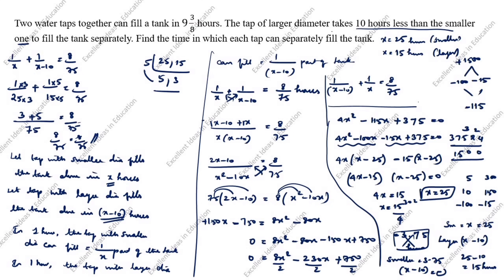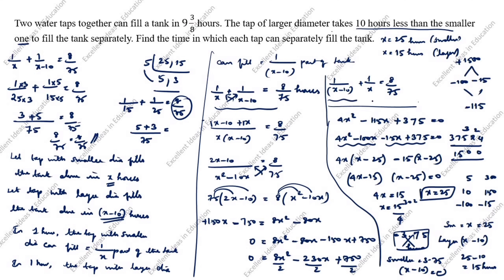You can also verify using the other form: 1/(x minus 10) + 1/x = 1/15 + 1/25. Taking common denominator 75: 5/75 + 3/75 = 8/75. This also equals 8/75. You can use either equation form and the answer is the same. This completes the splitting the middle term method.